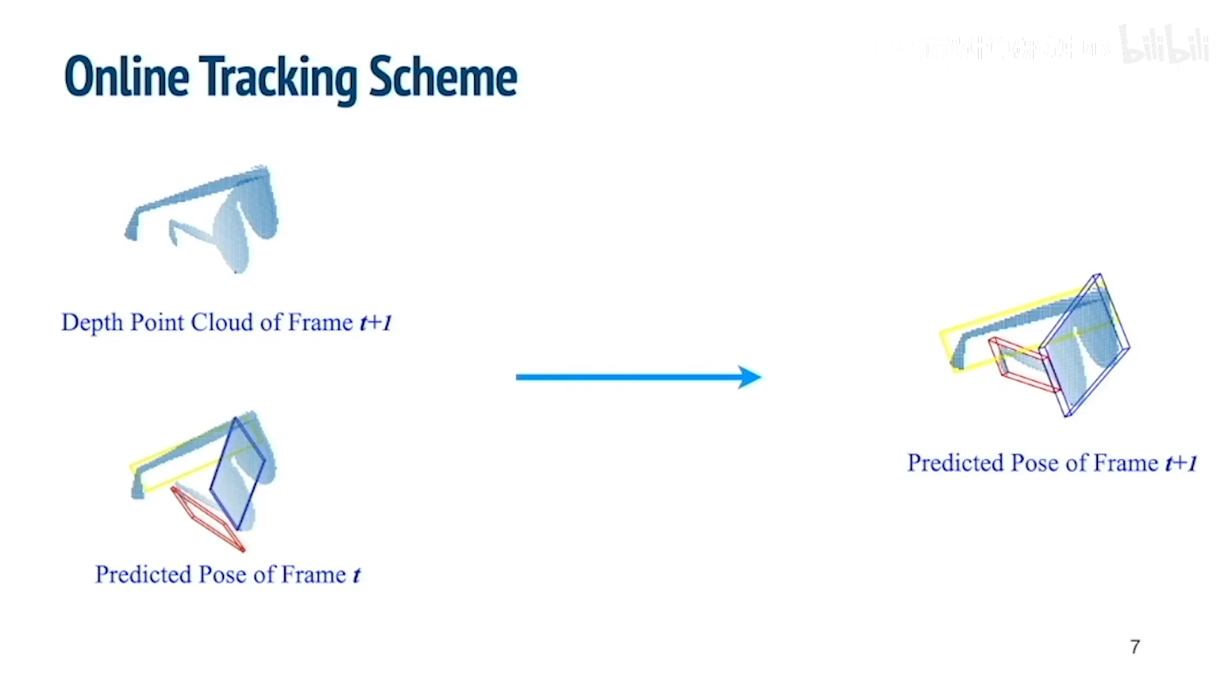Our tracking is done in an online frame-by-frame fashion. At each time step, our framework takes the current point cloud and the pose prediction from the last frame. It then outputs a new pose prediction. This prediction can be fed as the input for the next frame. The problem can then be seen as a single-frame pose estimation problem conditioned on an extra pose input.